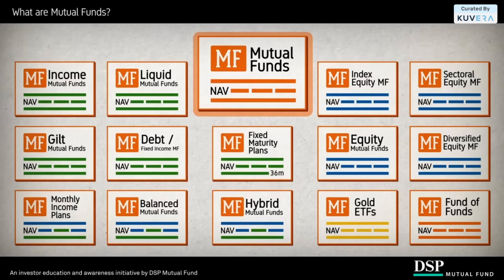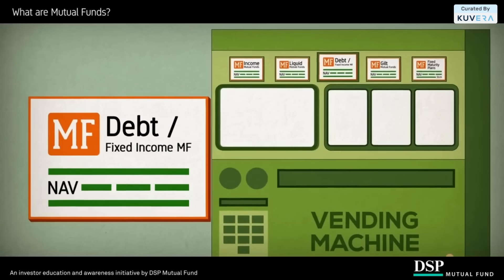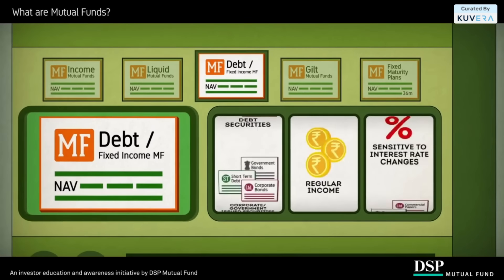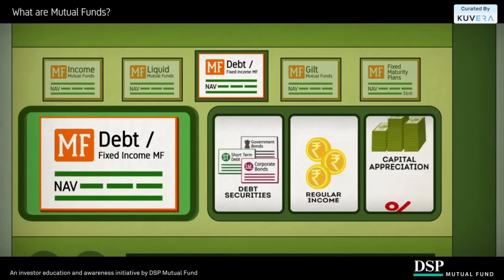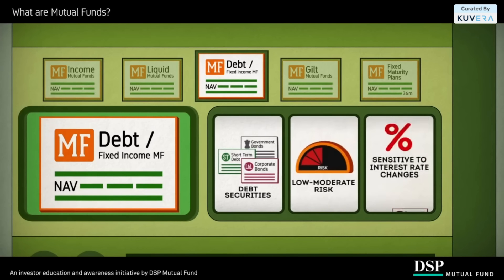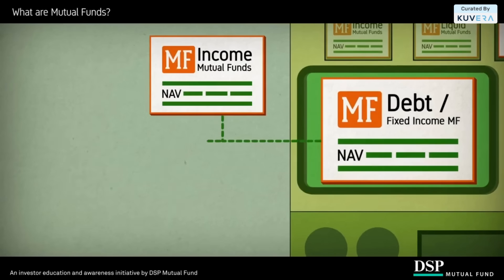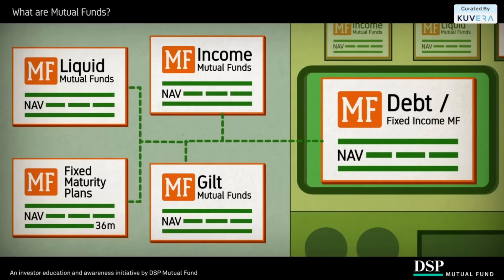There are many types of mutual funds suitable for different investors with differing needs and risk profiles. Let us start by understanding debt or fixed income funds. These funds primarily invest in debt securities such as bonds, debentures, and government securities. They are considered to be less risky and can provide modest returns. The various types of debt funds include income funds, gilt funds, liquid funds, and fixed maturity plans.